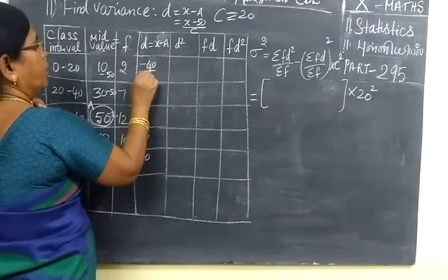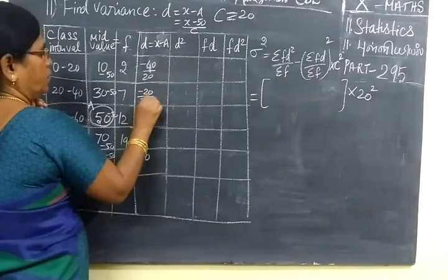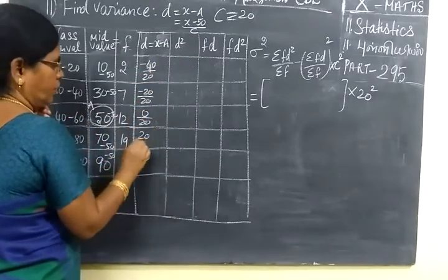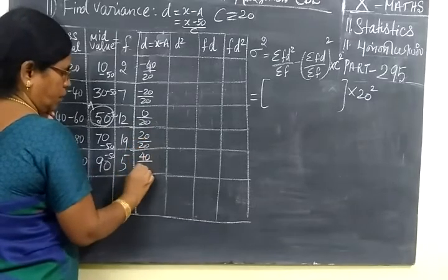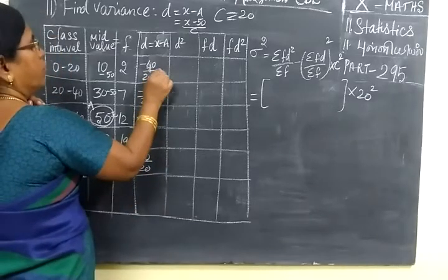Now in here d square, in here we put it by 20. Here by 20.